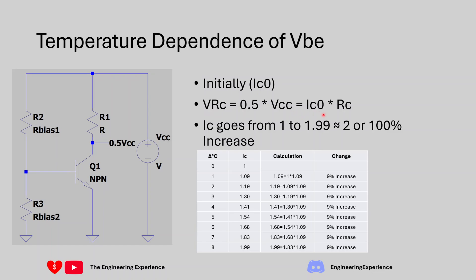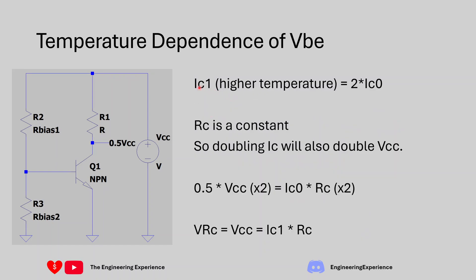So we're going back to this equation where we know RC is a constant. We know that the collector current is changing. Changing collector current will induce more voltage across the collector resistor which is this value over here. So IC1 which is basically the collector current at the higher temperature is equal to 2 times the collector current at our nominal temperature. RC is a constant like I explained before. So doubling IC will double VCC. So IC will go times 2.